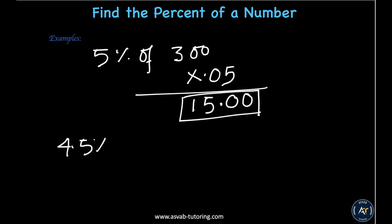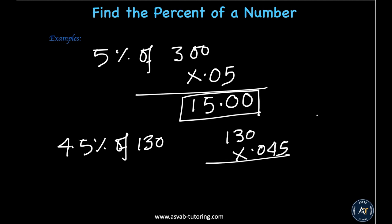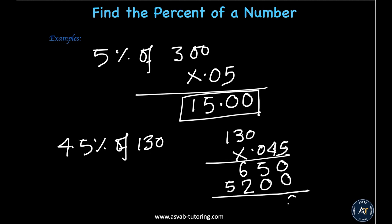Another example: 4.5% of 130. Multiply 130 by 0.045. Forgetting about decimals: 5 times 0 is 0, 5 times 3 is 15 carry 1, 5 times 1 is 5 plus 1 is 6. Then 4 times 0 is 0, 4 times 3 is 12 carry 1, 4 times 1 is 4 plus 1 is 5. Adding gives 5850. Move three decimal places from right to left — the answer is 5.85.